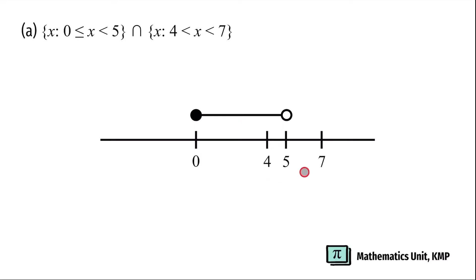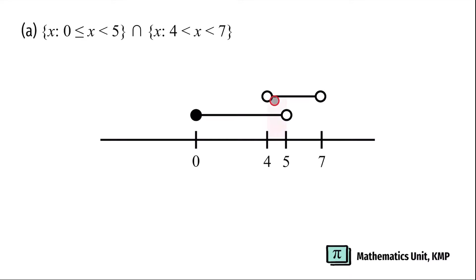On top of 4 and 7, we're going to put both open circles and connect these two circles with a straight line. Now let's do the operation of intersection. Intersection is where two lines or more overlap. So this is where the two lines overlap. Therefore, the solution set is x such that x is greater than 4 and x is less than 5.